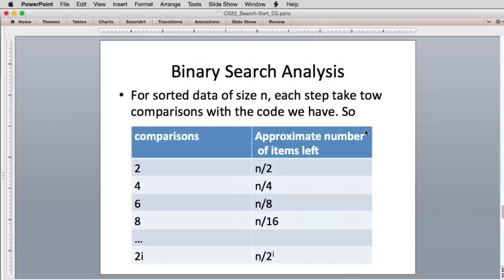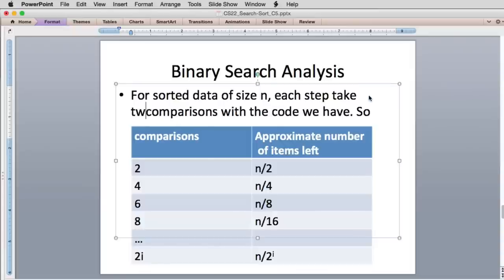Now let's look at how do we analyze binary search. So we're going to have to. This is in the book here. For sorted data of size n, each step takes two comparisons with the code. So what we have is the first step we have two comparisons. The next time through the loop we have four comparisons. And so on. Because we're comparing the midpoint twice. We're comparing it to see if it matches. And then we're comparing if it's less than.